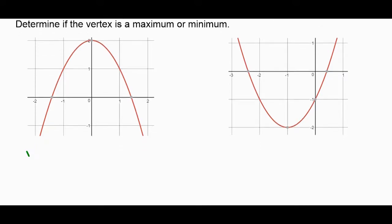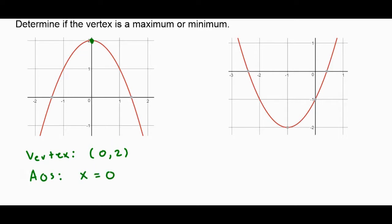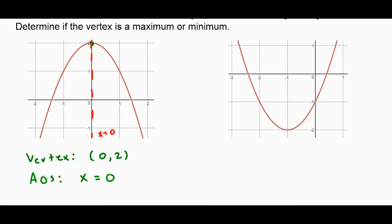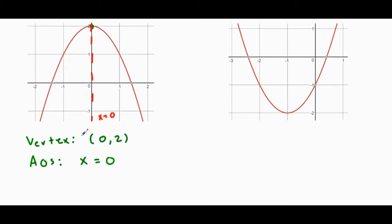Let's look at a couple of examples: we're going to find the coordinates of the vertex, write the equation of the axis of symmetry, and determine if the vertex is a maximum or minimum. Starting with the graph on the left, I see the vertex right here — it's the point (0, 2). My axis of symmetry is therefore the vertical line X equals 0, which divides the parabola in half. Since my parabola is opening down and the vertex is the highest point, this is a maximum.